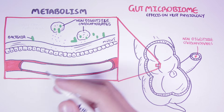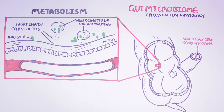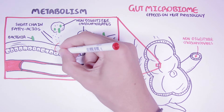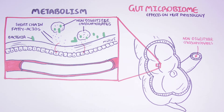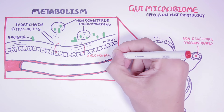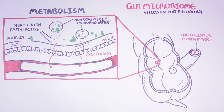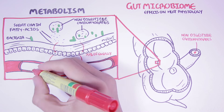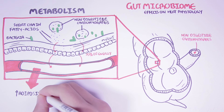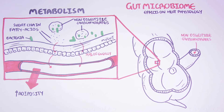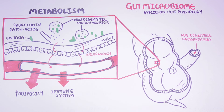Through this fermentation process, the bacteria will produce a by-product — a substance known as short-chain fatty acids. Some of these short-chain fatty acids, such as butyrate, are used as energy by the colon cells. Up to 70% of the energy used by colon cells comes from short-chain fatty acids. Short-chain fatty acids that are absorbed into the blood can have other effects around the body. There is some evidence that short-chain fatty acids influence adiposity by increasing lipogenesis, and they have also been shown to influence the immune system in many ways, as well as play a key role in the health of colon cells.